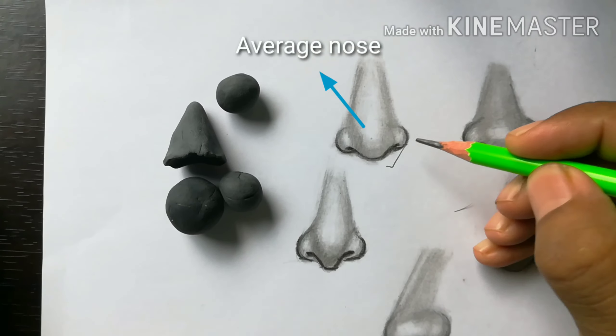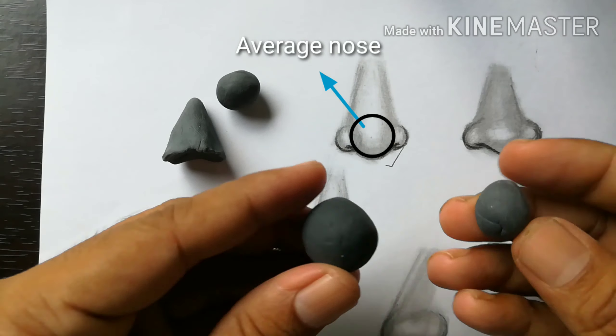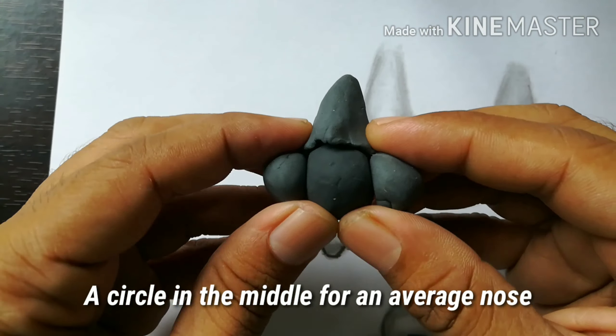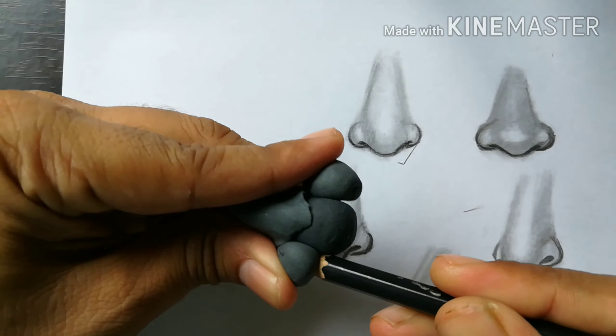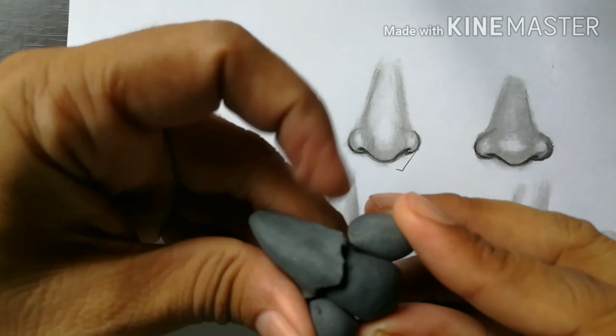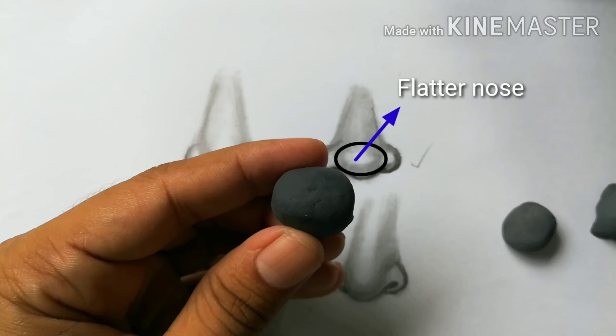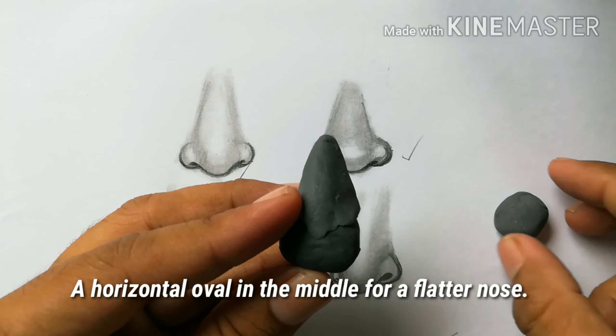I would like to make it more clear to you by using these 3D objects. Just try to observe how I'm going to form all these three kinds of noses: the normal one, the flatter one, and the sharper one.